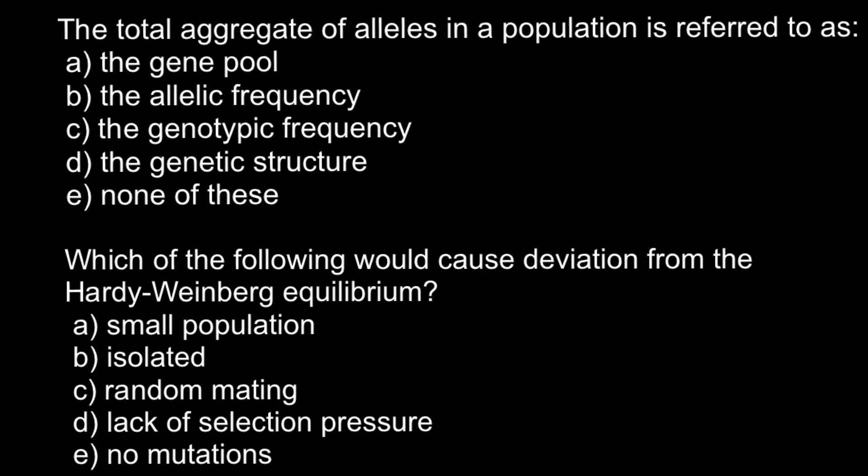So here is the first question. The total aggregate of alleles in a population is referred to as: answer A, the gene pool; B, allelic frequency; C, the genotypic frequency; and answer D, the genetic structure; and E, none of these.